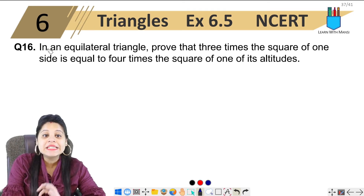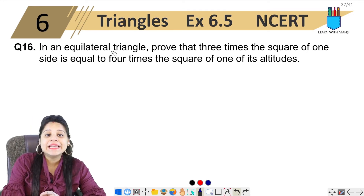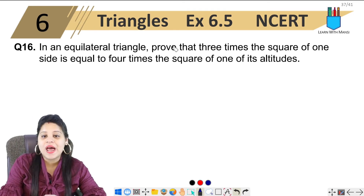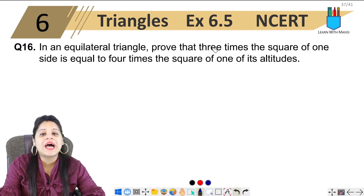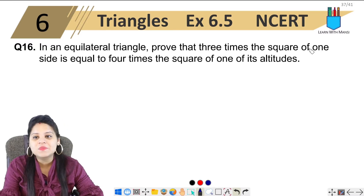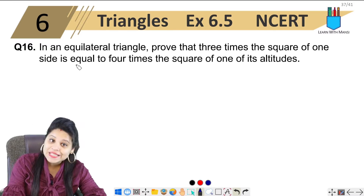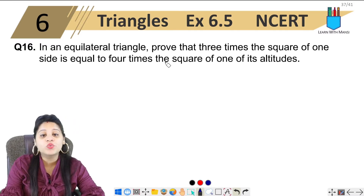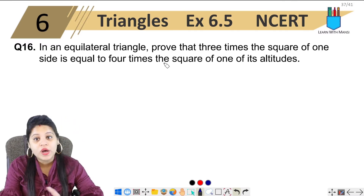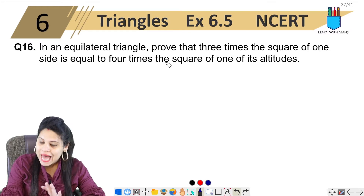The question says: in an equilateral triangle, prove that 3 times the square of one side is equal to 4 times the square of one of its altitudes.